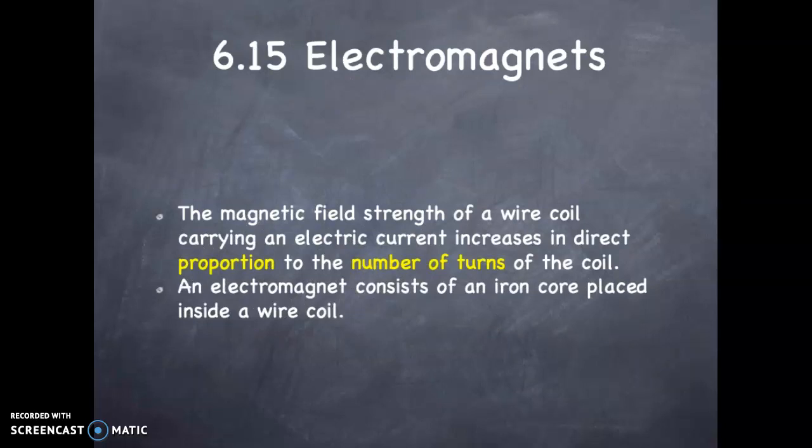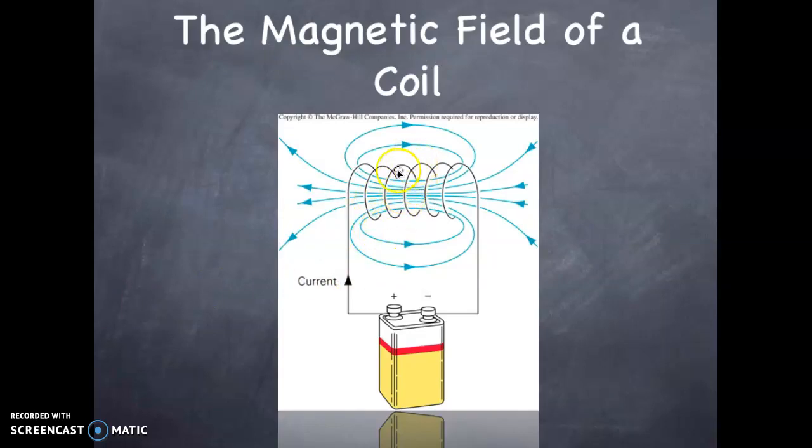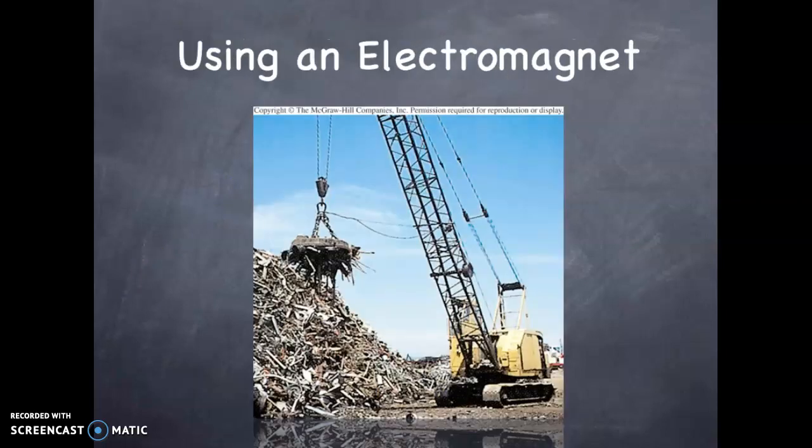The magnetic field strength of a wire coil current increases in direct proportion to the number of turns of the coil. An electromagnet consists of an iron core placed inside a wire coil. Here's an illustration. This is an electromagnet. Several turns of wire as shown here. Once you drive a current through that, you really create a magnet: north pole, south pole. That is the effect of the way an electromagnet is created. We can enhance this by having many turns of wire, which strengthens the overall effect of the electromagnet.